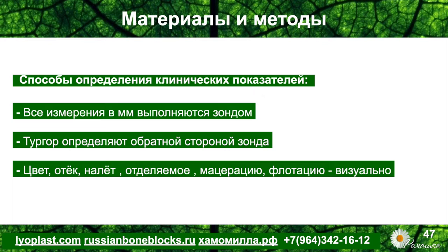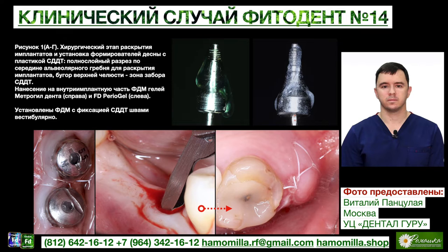Способы определения клинических показателей следующие: все измерения в миллиметрах выполняются зондом и фиксируются в миллиметрах. Тургор определяется обратной стороной зонда. Другие показатели — цвет, отёк, наличие налёта, отделяемого, мацерации и флотации десны — определяем визуально.